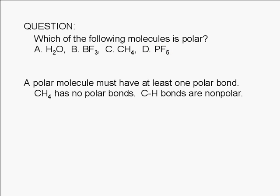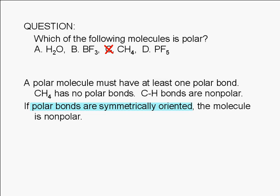A polar molecule must have at least one polar bond. Methane has no polar bonds. Carbon-hydrogen bonds are nonpolar. Therefore, choice C is incorrect. If polar bonds are symmetrically oriented, the molecule is nonpolar.